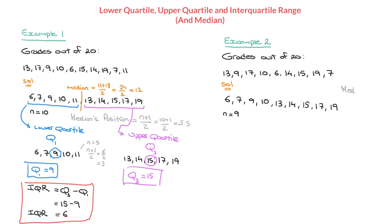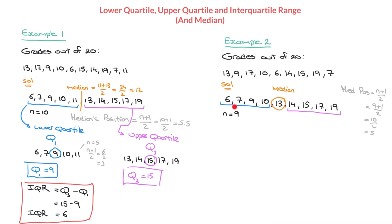The median's position equals (n + 1) / 2. With n = 9, that's (9 + 1) / 2 = 10 / 2 = 5. This tells us the median is the fifth value, which is 13. What's slightly different here compared to example 1 is that this list has a middle value — 13 — and this middle value won't be included in the lower portion of the data, nor in the upper portion. It stays right in the middle.